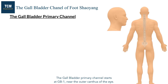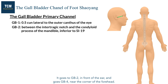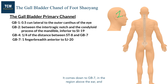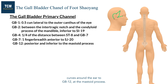The gallbladder primary channel starts at GB1 near the outer canthus of the eye. It goes to GB2 in front of the ear and goes to GB4 near the corner of the forehead. It comes down to GB7 in the region above the ear and curves around the ear to GB12 at the mastoid process.